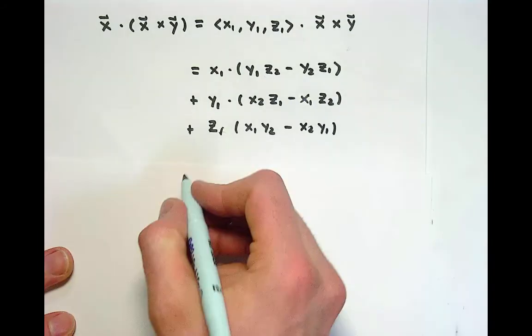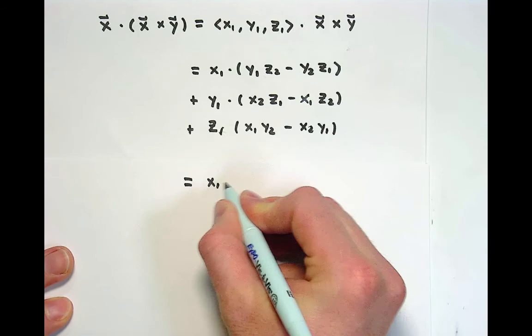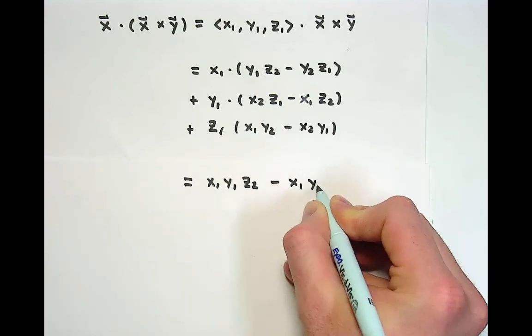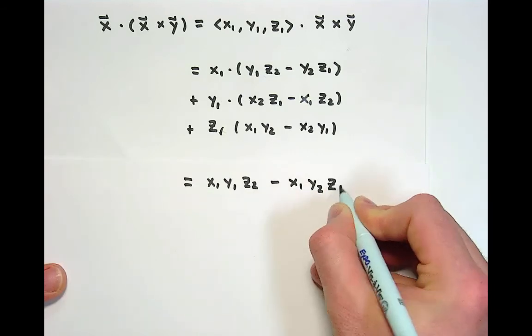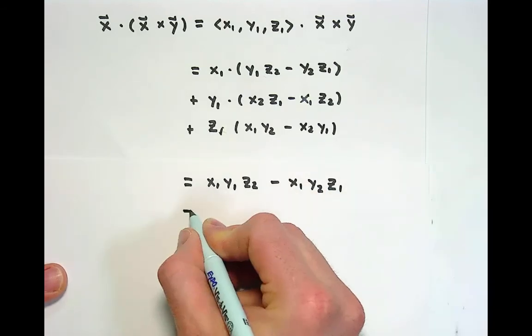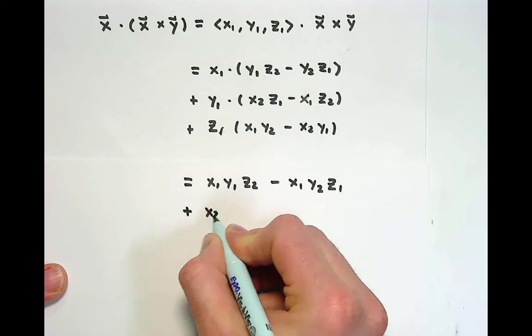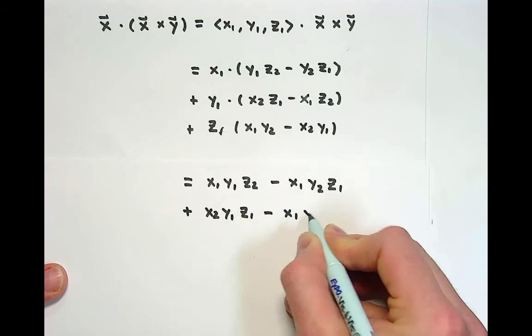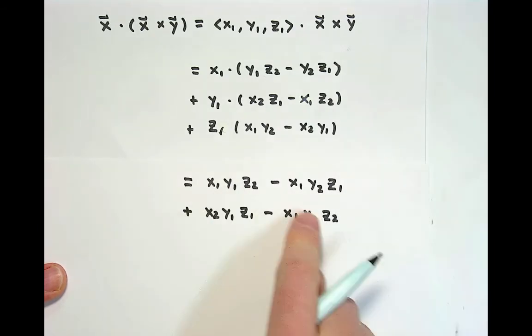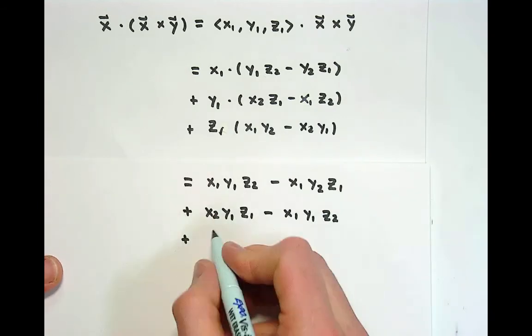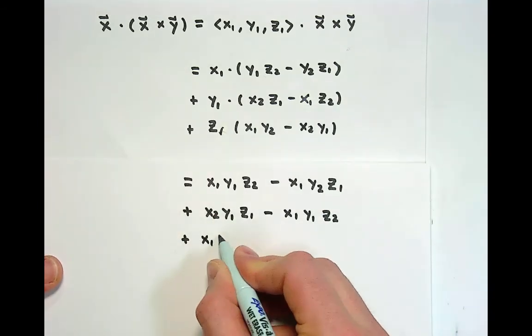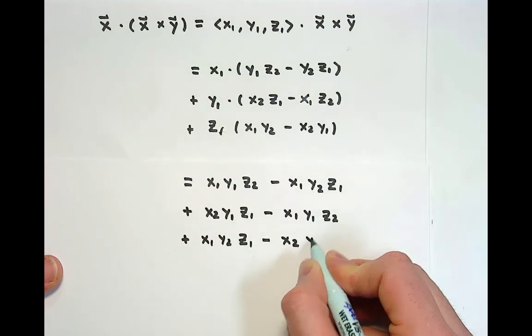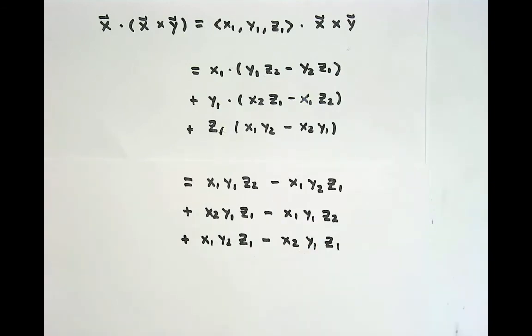Then we kind of follow our nose and see what happens. Like Toucan Sam, we follow our nose. We've got x₁y₁z₂ minus x₁y₂z₁. And then we add x₂y₁z₁ minus x₁y₁z₂. Already things are starting to work out as we said they would. And then finally, we have x₁y₂z₁ minus x₂y₁z₁.